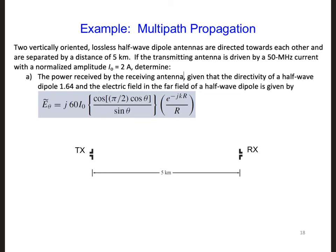say we have two vertically-oriented lossless half-wave dipole antennas that are directed towards each other and separated by a distance of 5 kilometers. If the transmitting antenna is driven by a 50 megahertz current with a normalized amplitude of 2 amps,